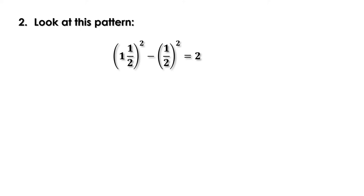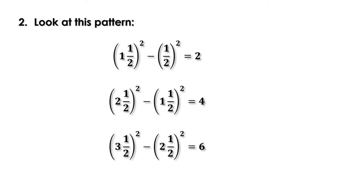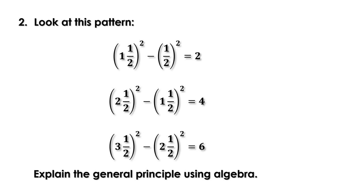Second problem: look at this pattern. Line 1: (1½)² - (½)² = 2. Line 2: (2½)² - (1½)² = 4. Line 3: (3½)² - (2½)² = 6. Explain the general principle using algebra. In the first line, 1½ is half more than 1 and ½ is half less than 1. Similarly, in the second line, 2½ is half more than 2 and 1½ is half less than 2. In the third line, 3½ is half more than 3 and 2½ is half less than 3.